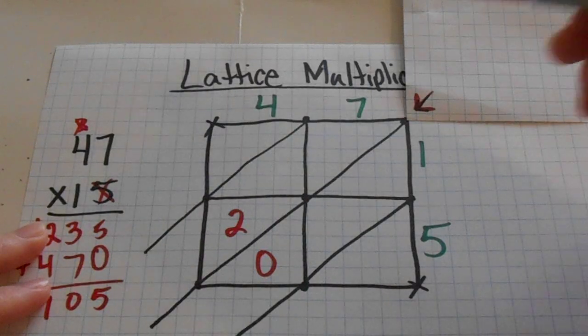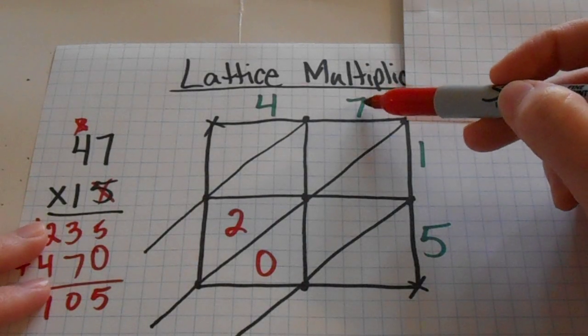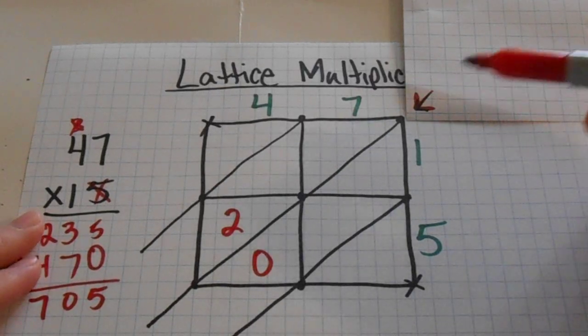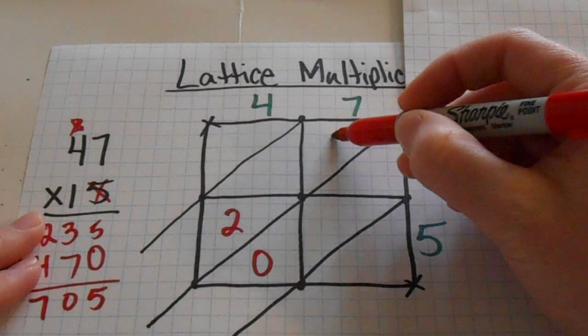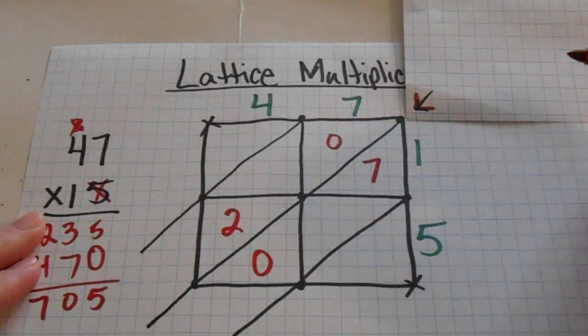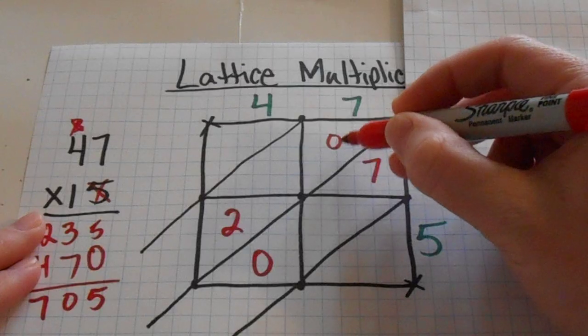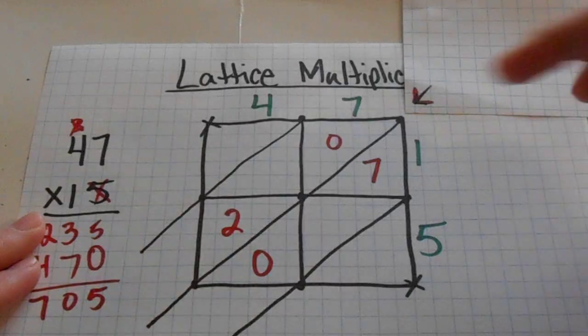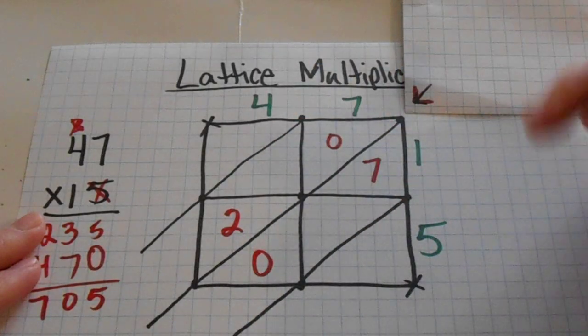I'm going to slide my paper up here. Now I need to multiply 7 times 1. Since 7 times 1 is going to give me a 1 digit number, I'm going to put a 0 here to hold my place in the tens place and a 7 down here. I don't want to write a 7 up here because that's going to give me 70 in this box and that is not what 7 times 1 is. Now I've got these other 2 boxes to fill in.